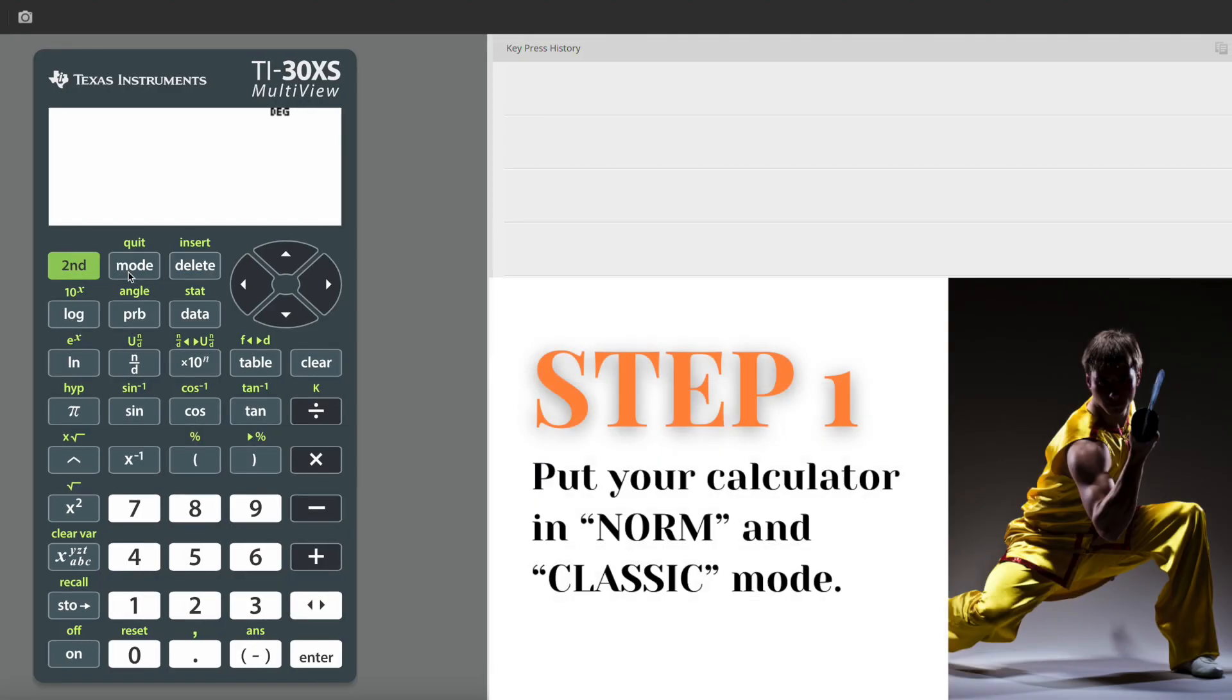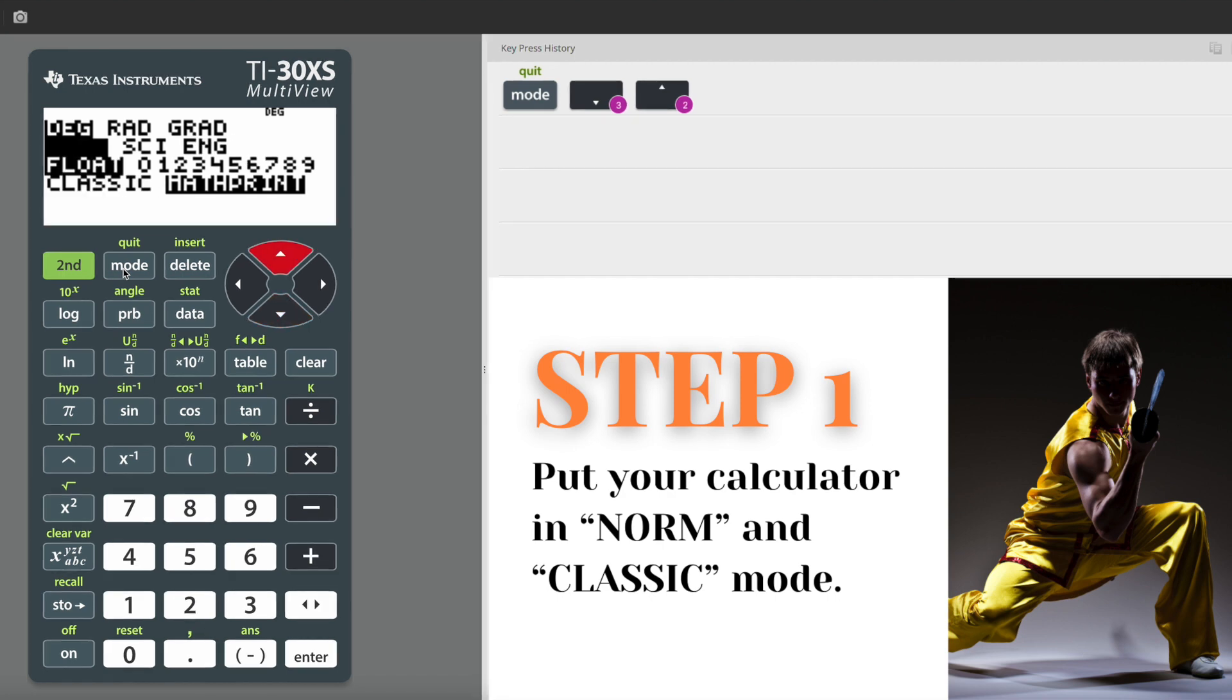You're going to go ahead and select the mode key and your calculator will probably be in normal math print mode, which is what you want most of the time. So second line down should have norm in black and the fourth line down should have math print in black. But I want you to switch to classic mode instead of math print.